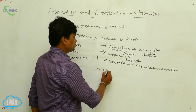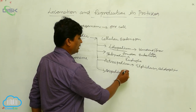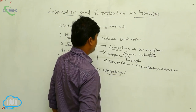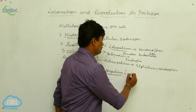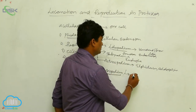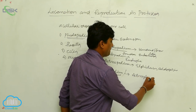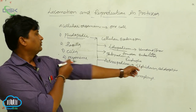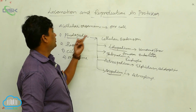The fourth type is axopodia, also called actinopodia or heliopodia. Axopodia are sharp, ray-like structures. An example is Actinophrys. These are the four types of pseudopodia present in protozoans.